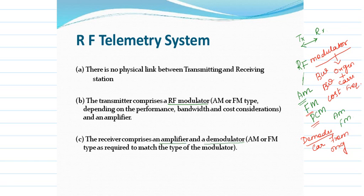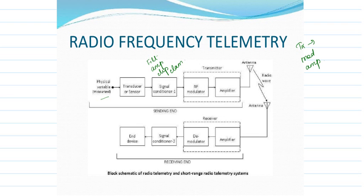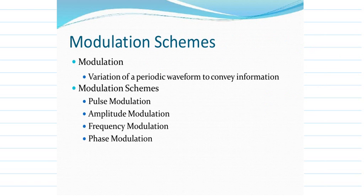For manipulating the signal we also need an amplifier circuit. The RF telemetry block diagram consists of: physical variable → transducer → signal conditioning (which includes amplification, filtering, clipper, or clamper) → transmitter block (modulator and amplifier) → antenna → receiver block (demodulator and amplifier) → signal conditioning → output display end device. That is the radio frequency telemetry block diagram.